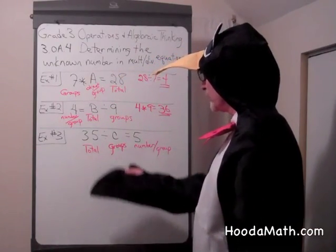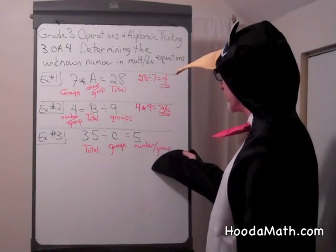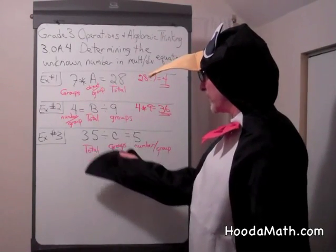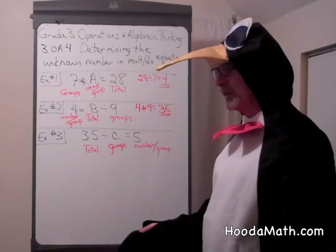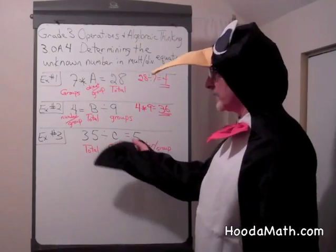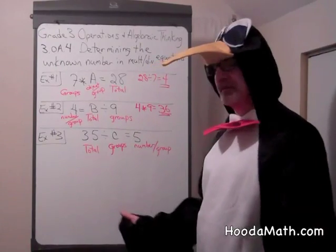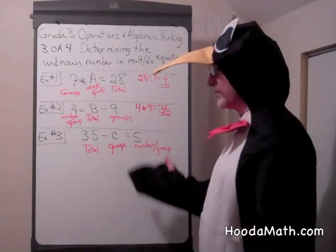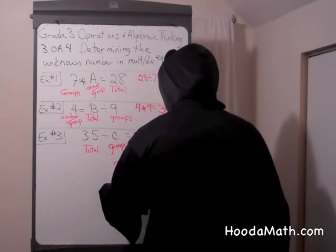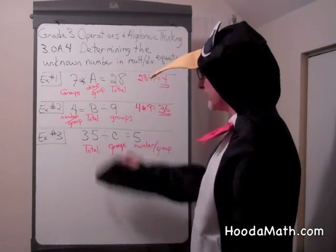In example 3, we know the total. We don't know how many groups there are, but we know how many are in each group — there's 5 in each group. So how many groups do we need to get up to 35? Well, you can guess and check: 5 times 1, 5 times 2, 5 times 3, until you get up to 35. 5 times 4 is 20, 5 times 6 is 30, 5 times 7 — so we know there are 7 groups. Another way is to just say 35 divided by 5 equals 7.